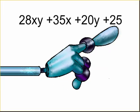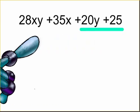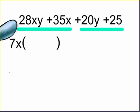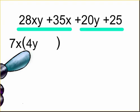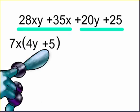What we do in this situation is we group like terms together. In this case, we can group our first term 28xy with 35x because both can factor out a 7x. 7x goes into 28xy 4y times. 7x goes into 35x 5 times.